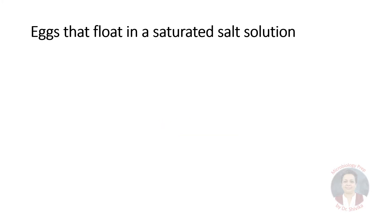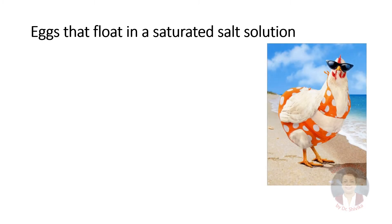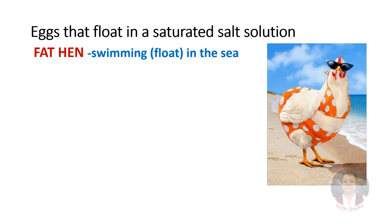Our first mnemonic is for the eggs that float in a saturated salt solution. Keep this image in your mind. We see a fat hen in swimming gear ready to go swimming in the sea, so obviously it is going to be able to float. So 'fat hen' is our mnemonic to remember eggs that float in a saturated salt solution.